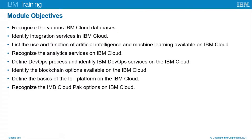We're going to start by looking at the different IBM Cloud databases, then look at integration services within IBM Cloud. We're going to look at uses and functions of AI and machine learning available from IBM Cloud, and recognizing analytics services available. We're going to look at DevOps processes and IBM DevOps services, identify blockchain options available from IBM Cloud, as well as the basics of the IoT platform, and finish with IBM Cloud Pack options.